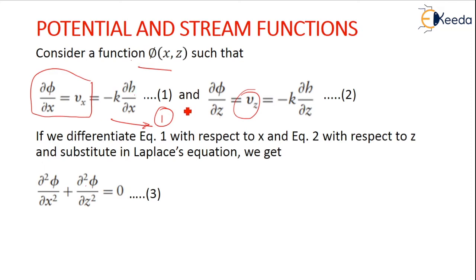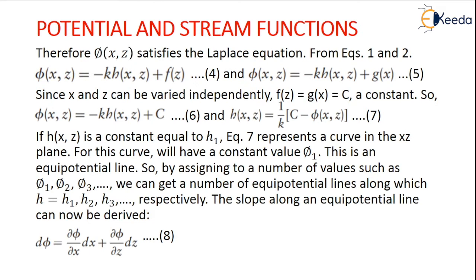We are also differentiating equation 2 with respect to z and substituting in the Laplace equation. We have this final equation — nothing but dou phi of x and z will satisfy the Laplace equation. So from equations 1 and 2 we have phi of x comma z is nothing but minus k times h of x comma z plus a function f of z. This equation is taken as equation 4.